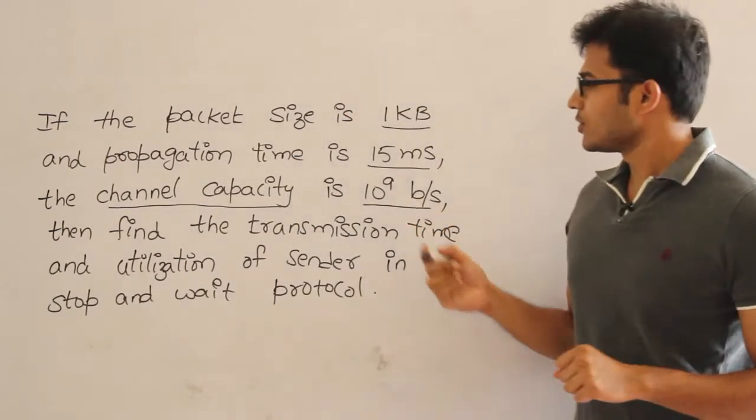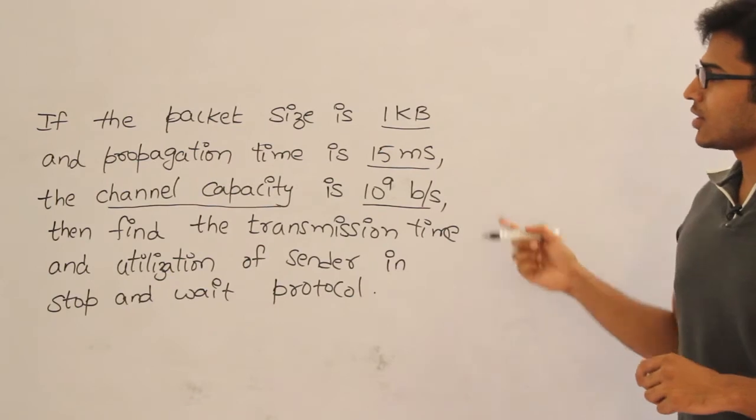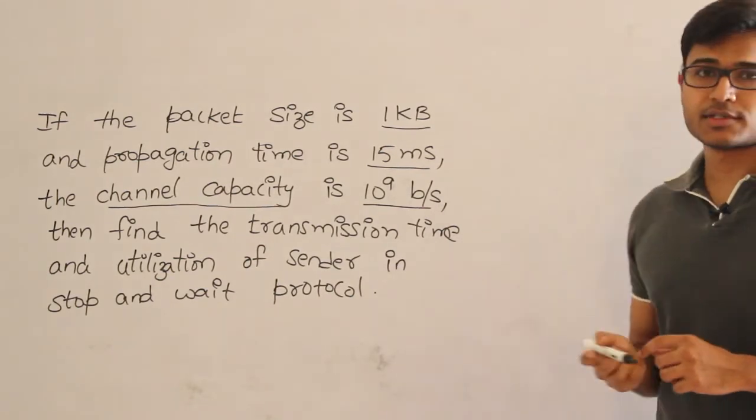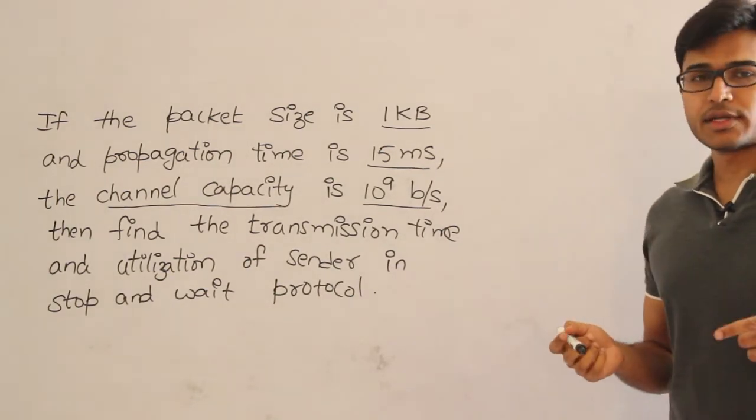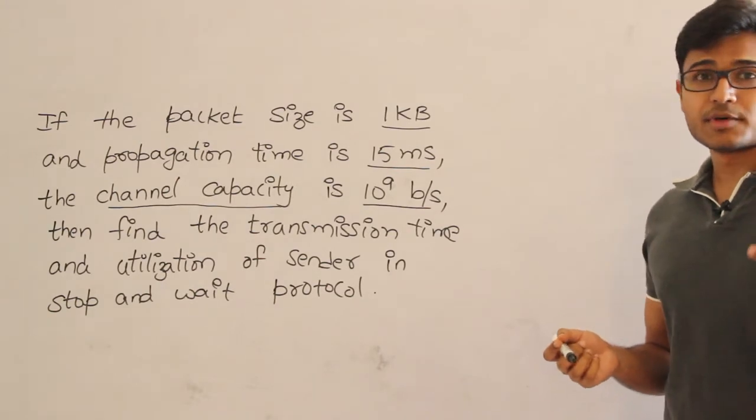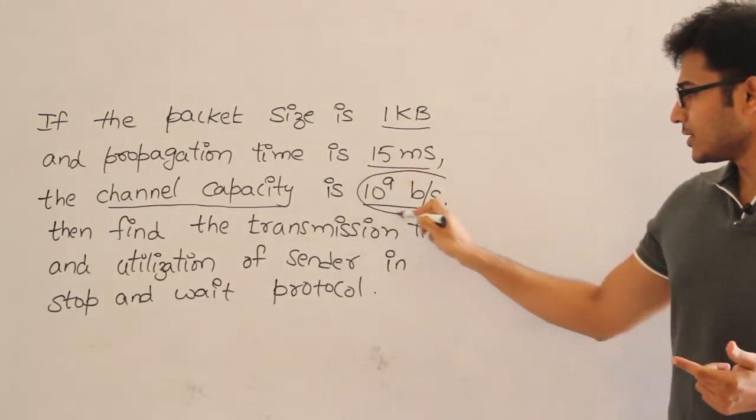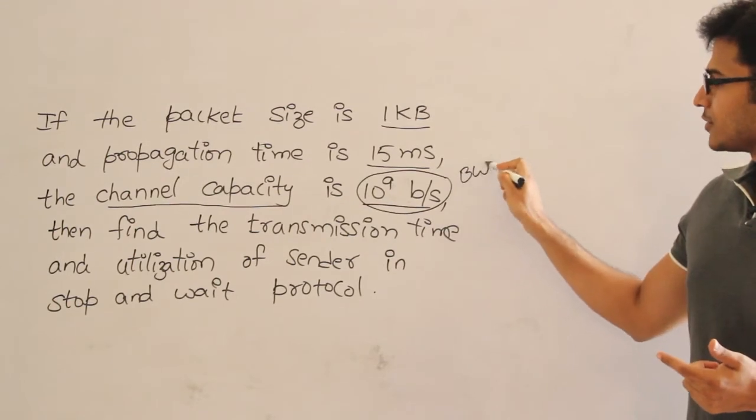But then here, if you look at it, they are talking that channel capacity is 10^9 bits per second, which means they are giving the channel capacity as bits per second. Therefore, it is not actually channel capacity. It is bandwidth. That is a twist in the equation.